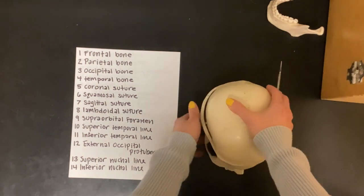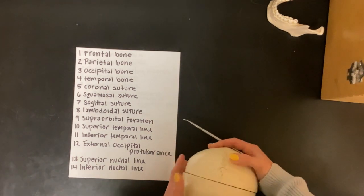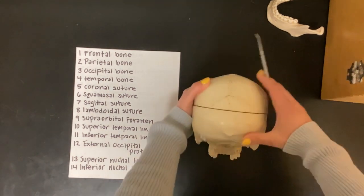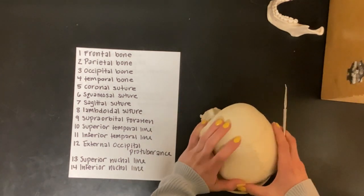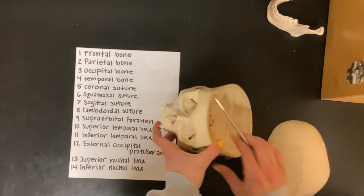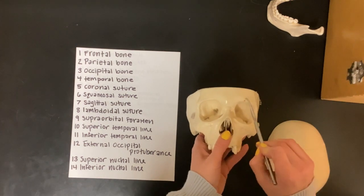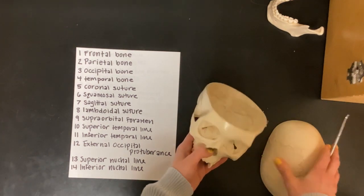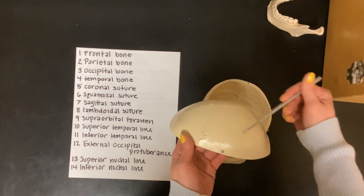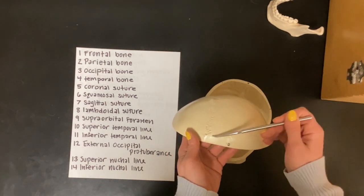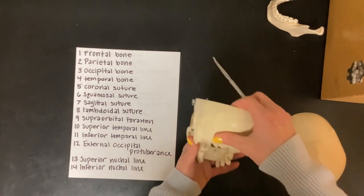Seven is the sagittal suture. Number eight is the lambdoidal suture — it outlines the occipital bone. Number nine is your supraorbital foramen. Ten is your superior temporal line, and then the inferior temporal line.